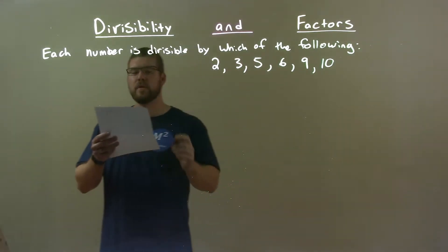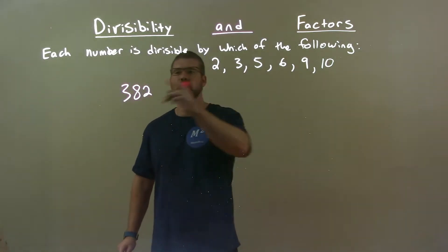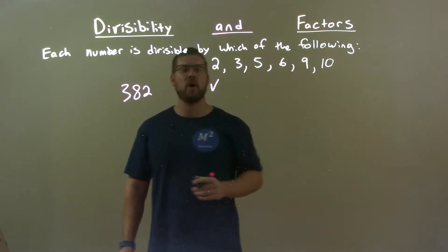If I was given this number 382, right off the bat, 2 works. It's divisible by 2 because this number is even. Always going to be.